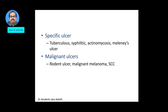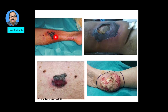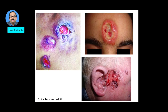The second variant is a specific ulcer — one that is pathognomonic of a particular illness. Examples include the tuberculosis ulcer with characteristic features, syphilitic ulcer, actinomycotic ulcer, and Meleney's ulcer. Malignant ulcers include rodent ulcer (basal cell carcinoma), malignant melanoma, and squamous cell carcinoma. As seen here: a Martorell's hypertensive ulcer, a Meleney's ulcer which is a post-operative synergistic gangrene, a melanoma with ulcer, and a squamous cell carcinoma. The tuberculosis ulcer has a characteristic bluish margin, multiple ulcers, and undermined edge. A gummatous or syphilitic ulcer is shown near the ear.